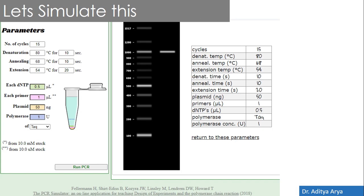A virtual simulator is available for demonstrating PCR. You can open the link on your browser and select parameters like number of cycles, duration, time, and volumes, then click Run PCR. You can check the resulting gel pattern — the molecular weight marker and the amplicon band. If there is an error, the amplicon will not appear. Increasing cycles makes the amplicon band thicker, simulating the increase in copies.